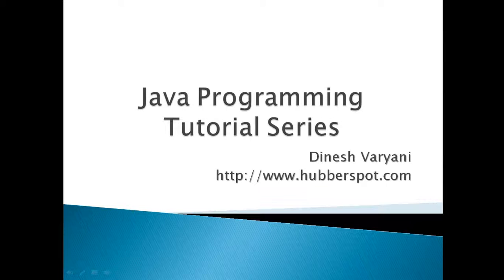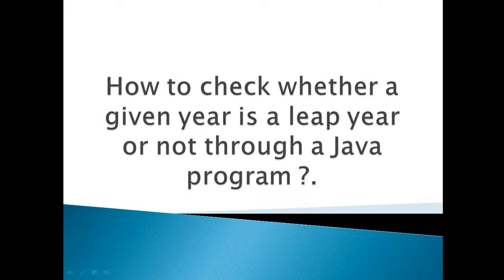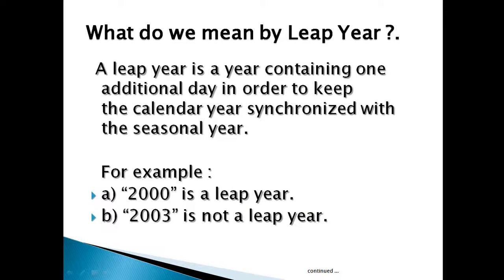Hello friends, welcome to my new Java programming tutorial series. Today we will discuss how to check whether a given year is a leap year or not through a Java program. A leap year is a year containing one additional day in order to keep the calendar year synchronized with the seasonal year. For example, 2000 is a leap year, 2003 is not a leap year.